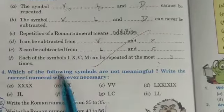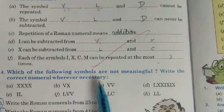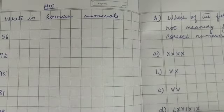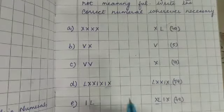So question number four is: which of the following symbols are not meaningful? Write the correct numeral wherever necessary. They have given few symbols and most of the symbols are meaningless, so you have to find it out.